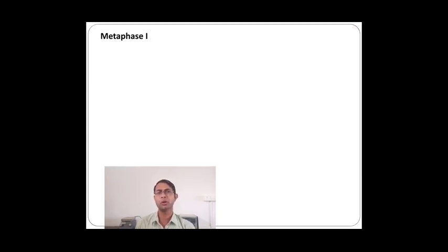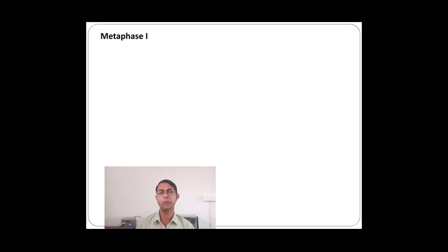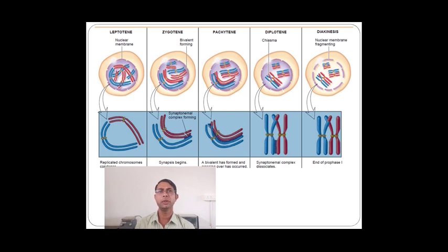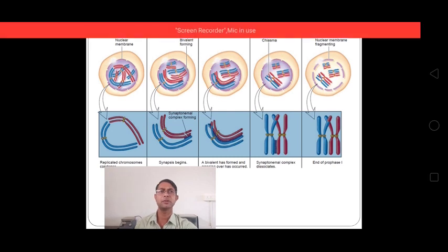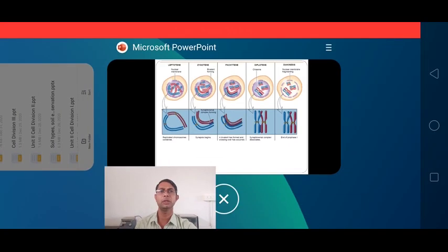This completes the discussion of today's lecture on prophase 1. In prophase 1, the different sub-phases are leptotene, zygotene, pachytene, diplotene, and diakinesis. In the next lecture, we are going to concentrate on metaphase 1.